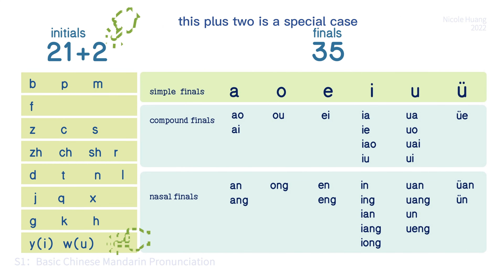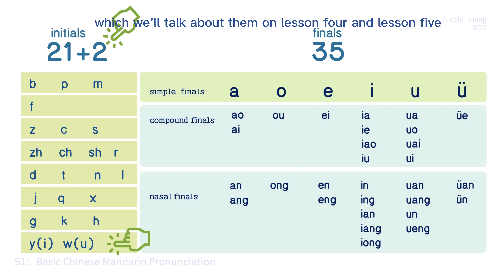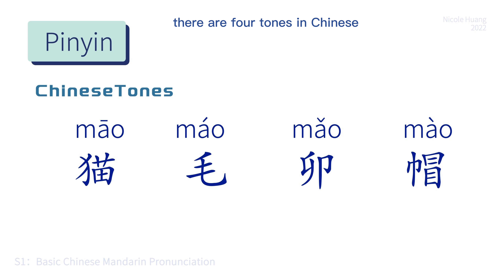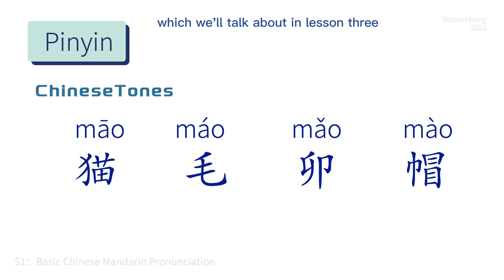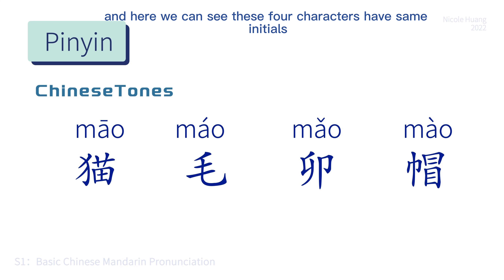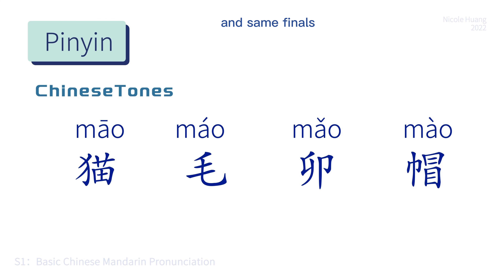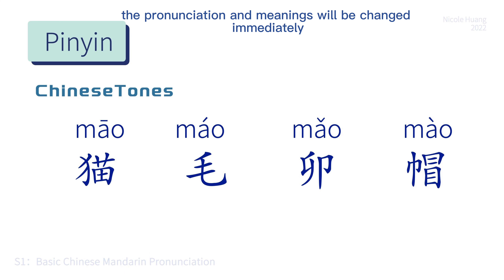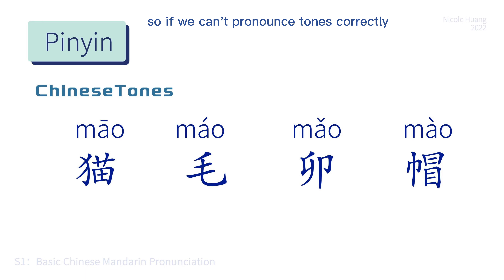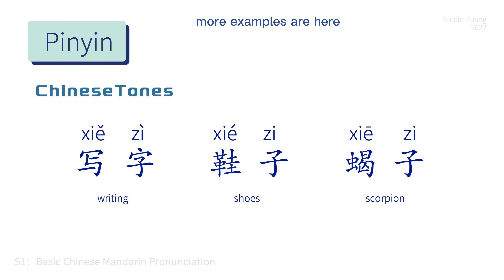This plus two is a special case which we'll talk about in Lesson 4 and Lesson 5. There are four tones in Chinese — five tones to be exact — and the fifth is a neutral tone, which we'll talk about in Lesson 3. Tones are a significant part of Chinese. These four characters have the same initials and same finals, but with different tones the pronunciation and meanings change immediately. So if we can't pronounce tones correctly, it will easily cause misunderstanding.